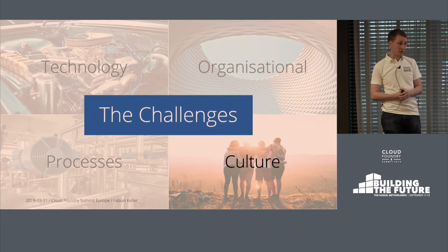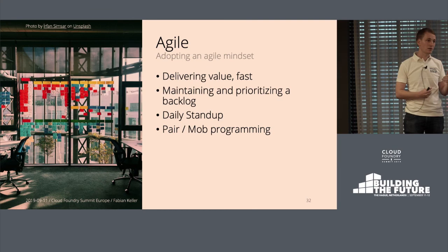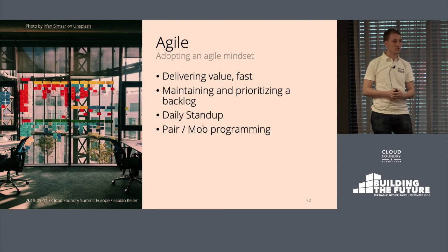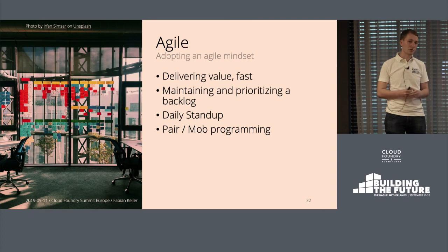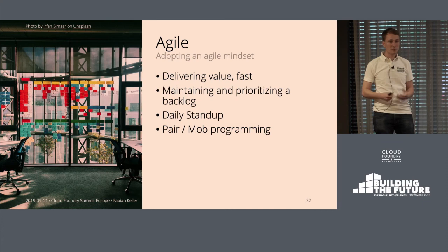The last part is about culture. The first thing was working in an agile setting — this was the base of what we do. We want to deliver value fast. That involves a lot because it's not the way people used to work: it's not only technological and tooling changes, but also the way they work together changed. We have a prioritized backlog, stand-up meetings, and different forms of collaboration like pairing and mob programming. That's also really a challenge for people to adapt to, but now they are used to it and can reap the benefits.